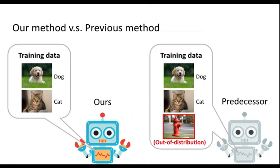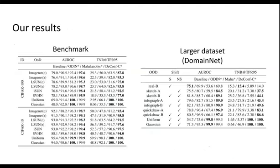The major difference between ours and our predecessor is that we do not need any out-of-distribution data for training the model. Although our method doesn't require extra knowledge about out-of-distribution, we still achieve good results on benchmark datasets and on a larger image dataset.